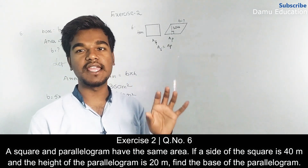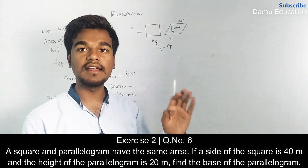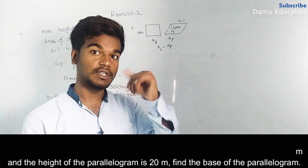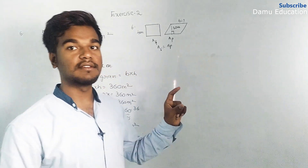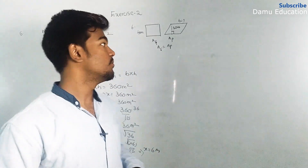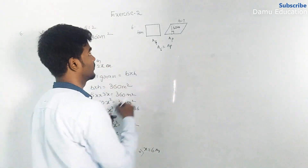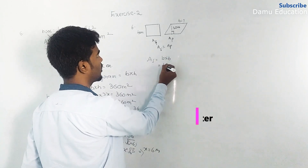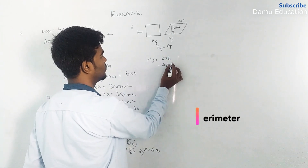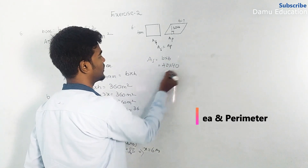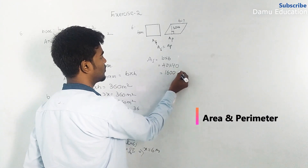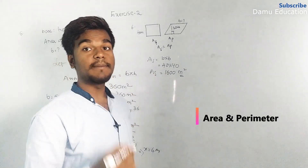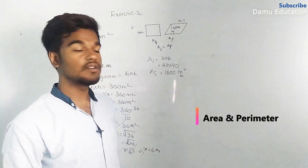First we find the area of the square, and since the area of the parallelogram equals that same value, we substitute it into the parallelogram formula. With the height already given, we can find the base. Area of square equals side into side, that is 40 meters into 40 meters, which gives 1600 square meters.